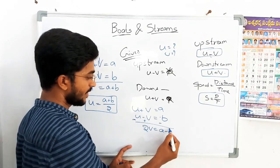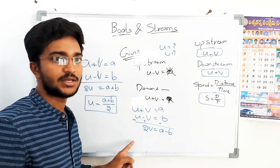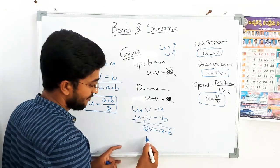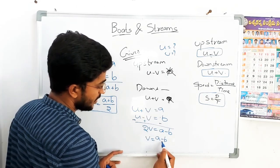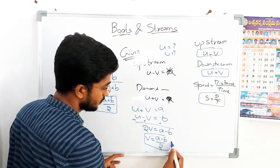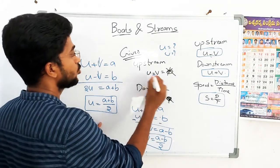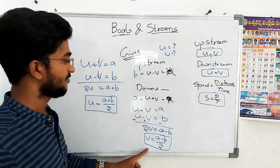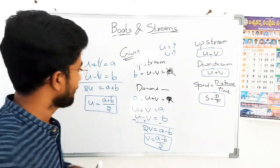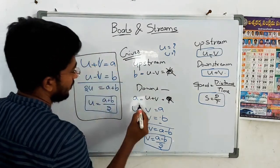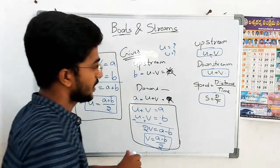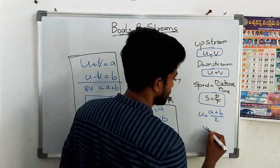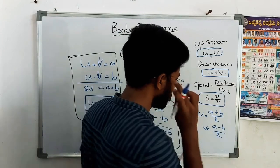So the two formulas are: U equals A plus B divided by 2, and V equals A minus B divided by 2. Here A is the downstream speed and B is the upstream speed. These are the key formulas for this type of question.